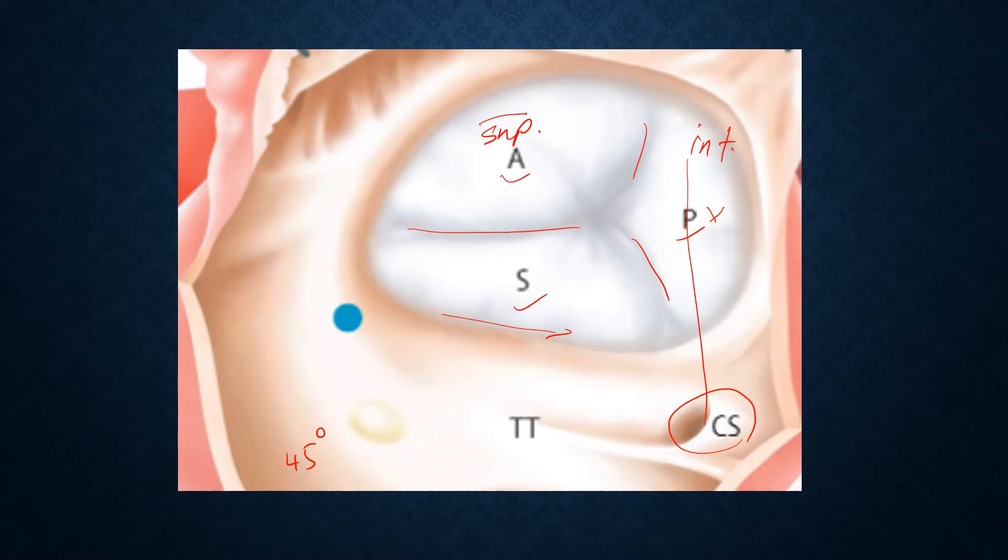The septal leaflet - this is the most superior part of the septal leaflet, and the most inferior part is next to the posterior leaflet.